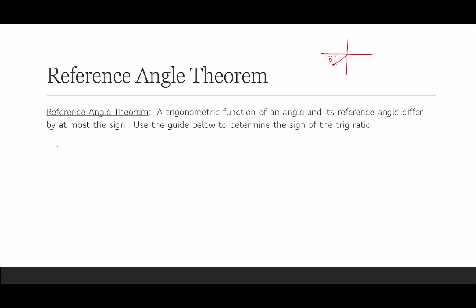I'm going to draw my coordinate plane and review our trig functions. Sine of theta in the coordinate plane is y over r, cosine is x over r, and tangent is y over x. We're going to fill in the coordinate plane with what is positive in each quadrant.